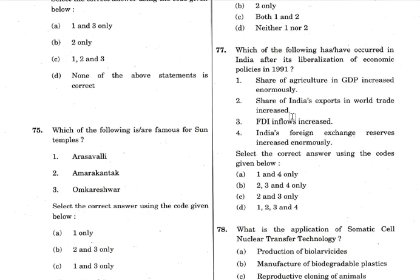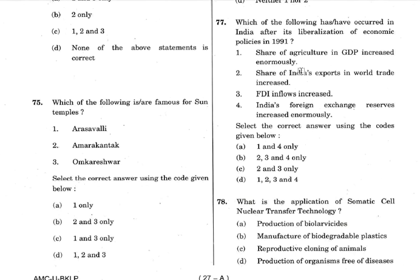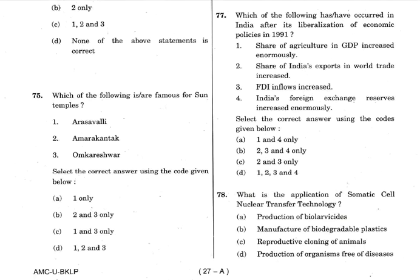Question 77: Which of the following have occurred in India after liberalization of economic policy in 1991? The LPG reforms happened in 1991. Share of agriculture in GDP increased enormously — that actually declined because we focused more on industrialization. So you can eliminate statement one. If you eliminate one, options A and D are gone.